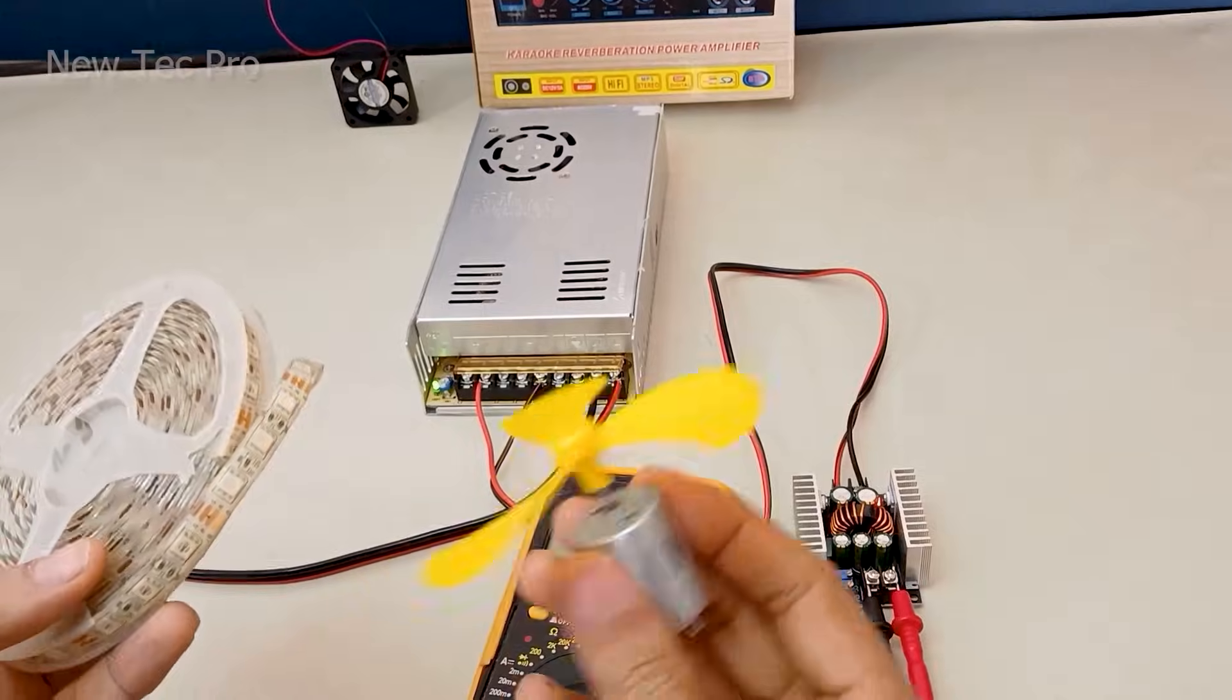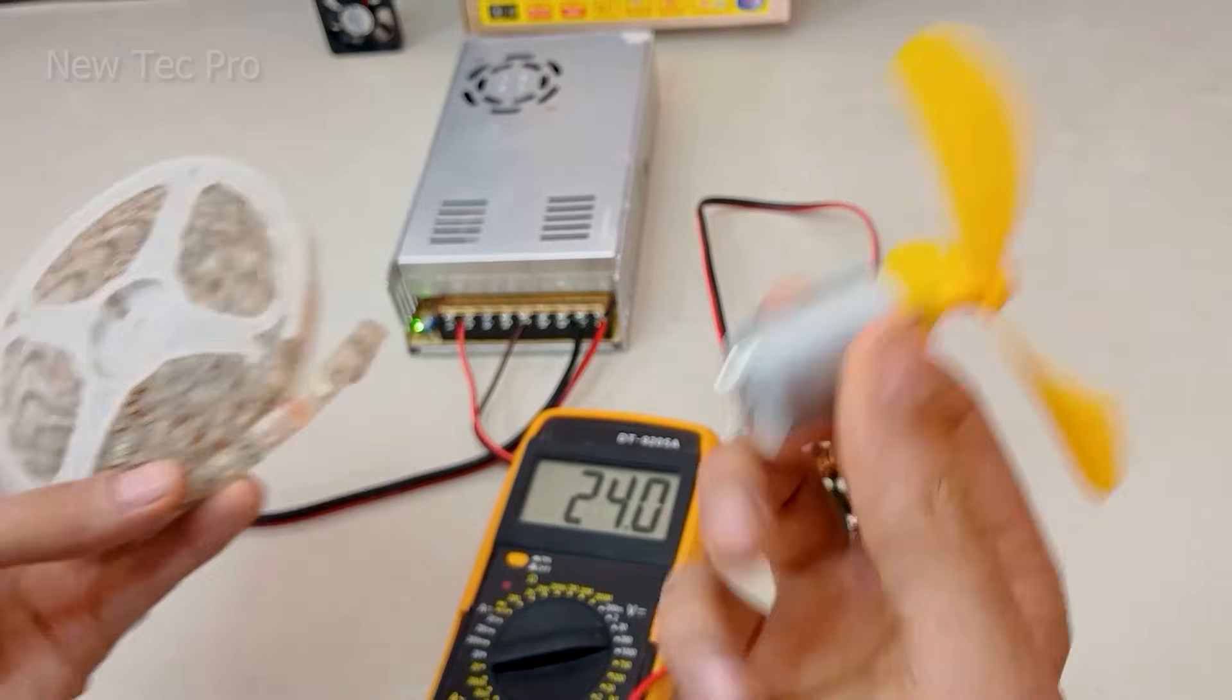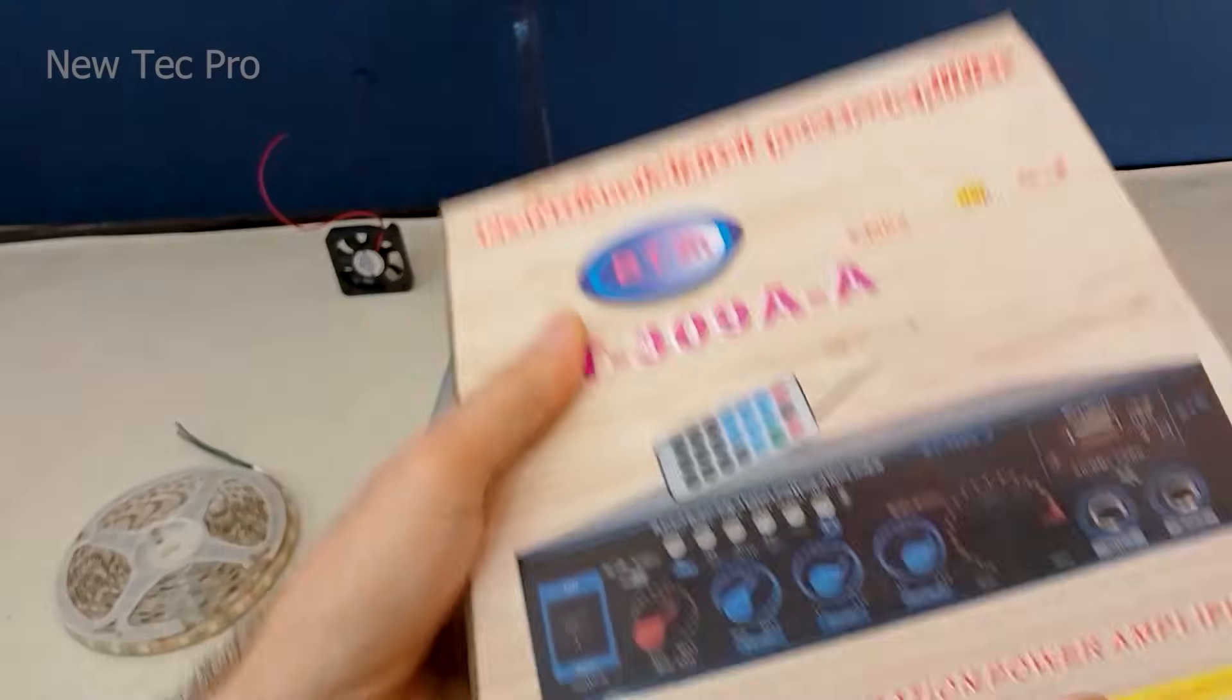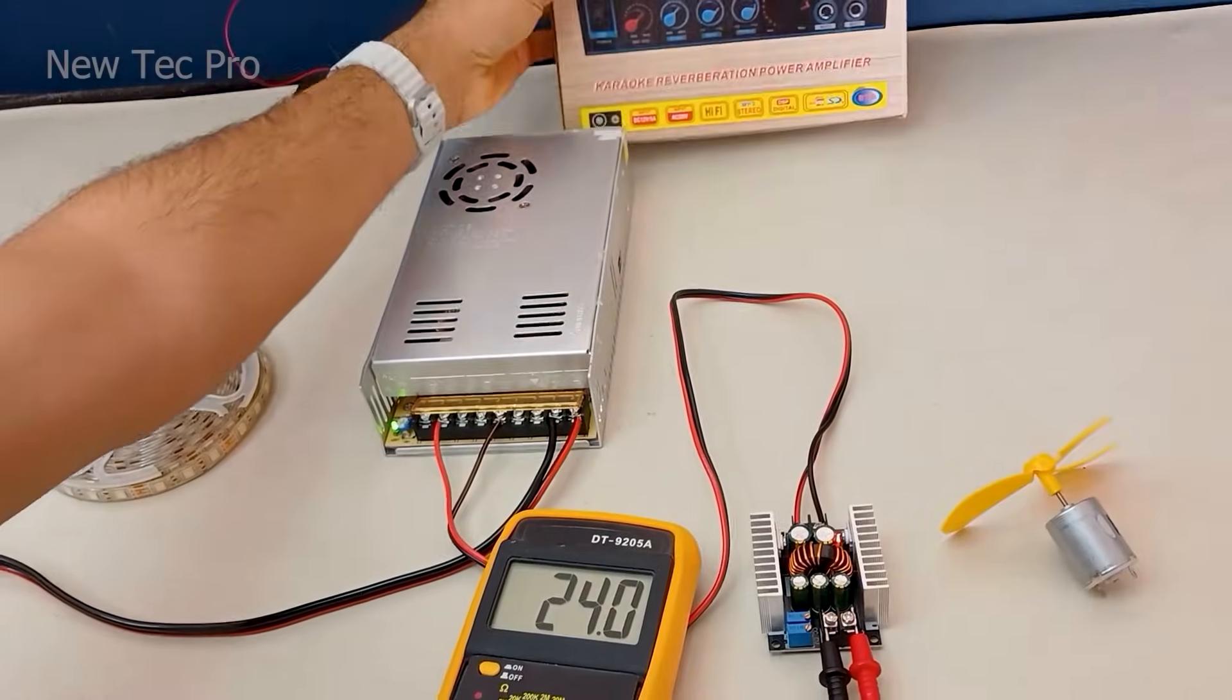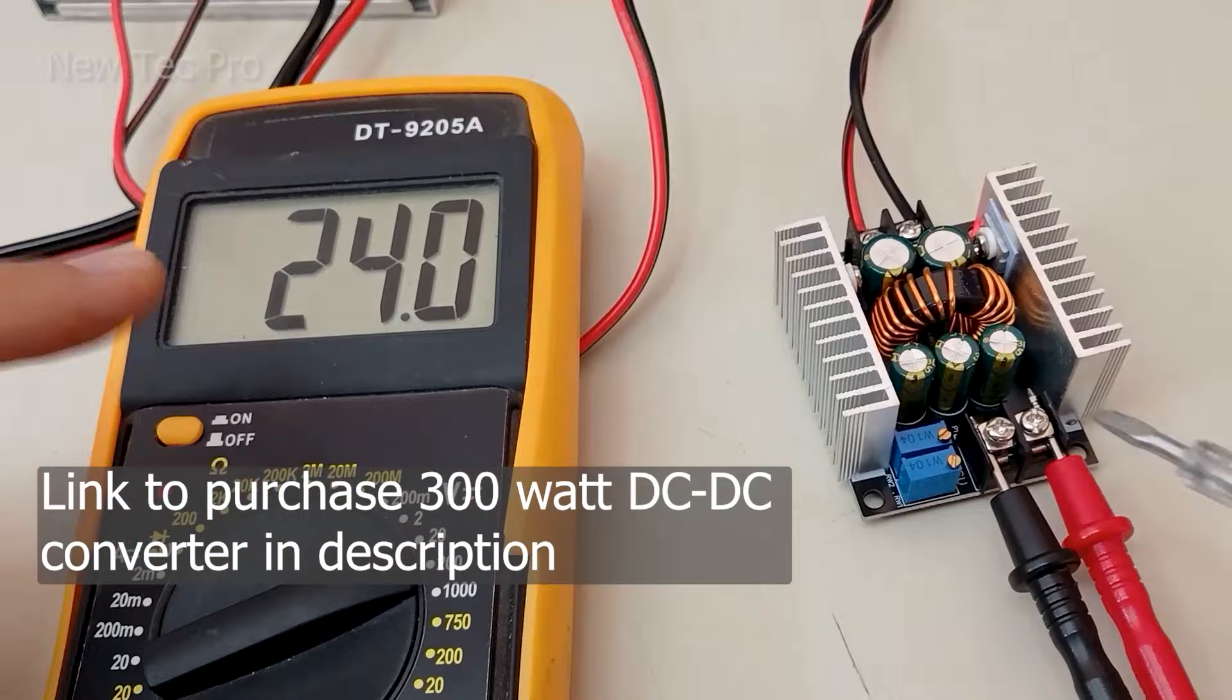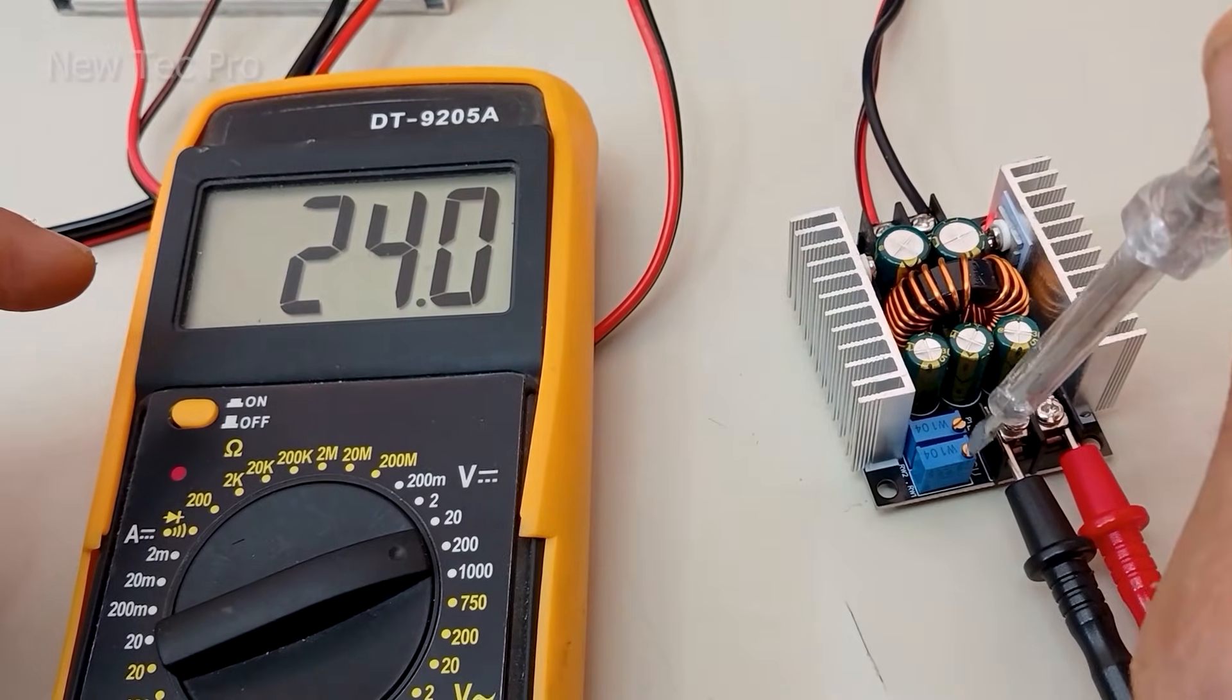Now for example number two, this motor, this LED, and this audio system, we need 12 volts. If you need one, use this link in the description. Let's step down to 12 volts.